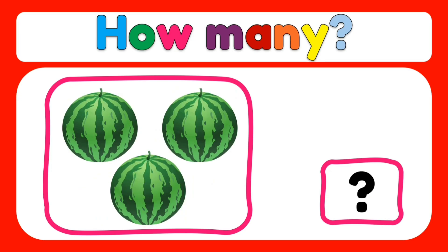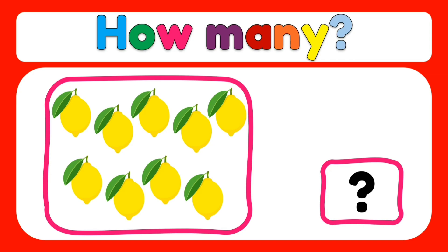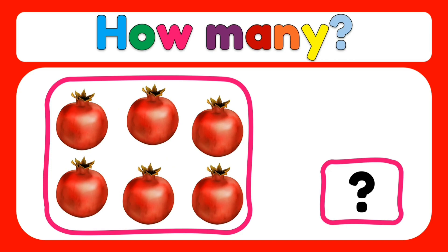How many watermelons do you see? Nine. Nine lemons. How many pomegranates do you see?